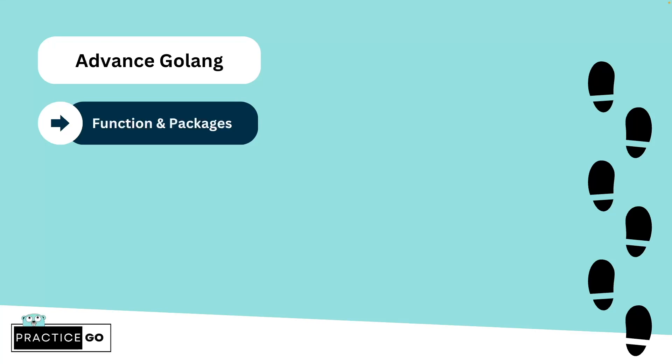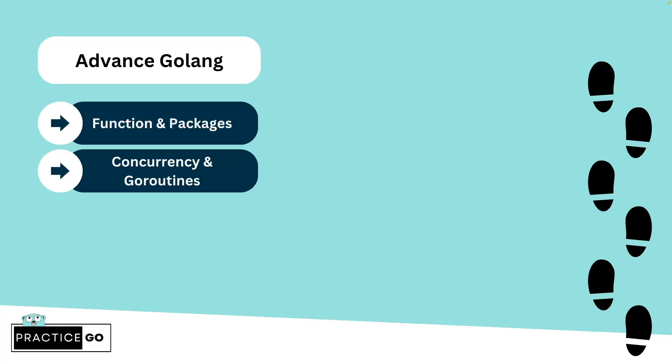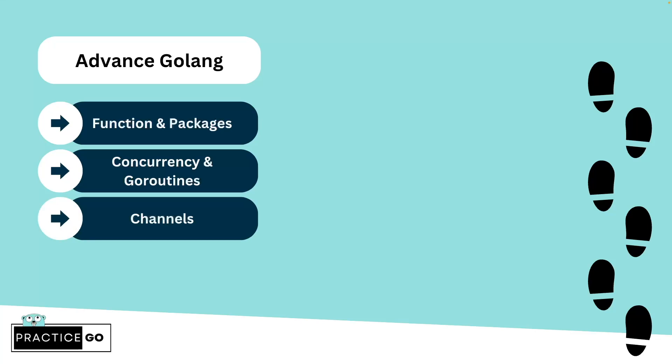For advanced concepts, first learn about functions and packages. In Golang, everything is packages — you can consider packages as the smaller unit in a Golang program. Then there is concurrency. Golang is by design a concurrent language and has goroutines. Unlike threads, goroutines are very lightweight — in one thread it can create a number of goroutines, and all processes run inside a goroutine. When two goroutines want to communicate with each other, they use channels as a bridge.